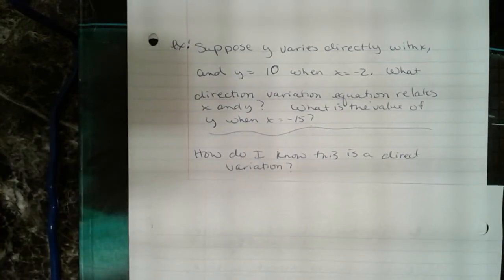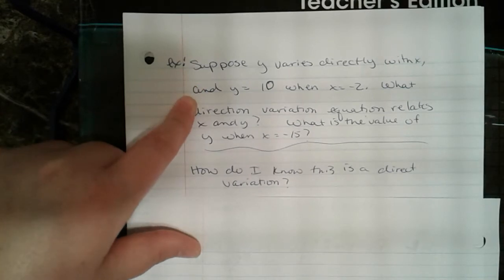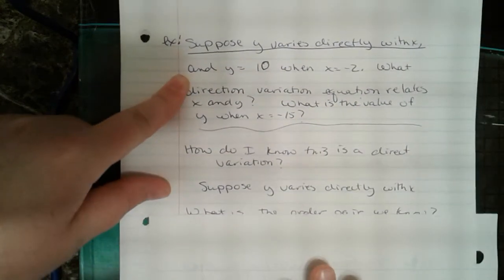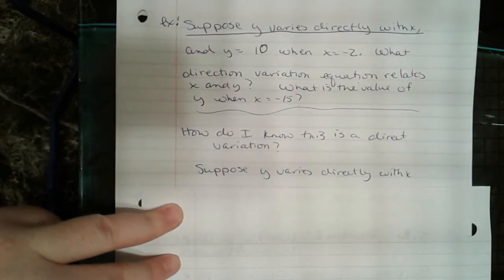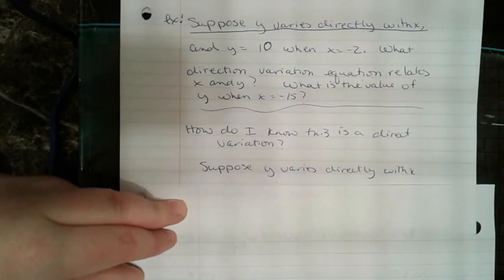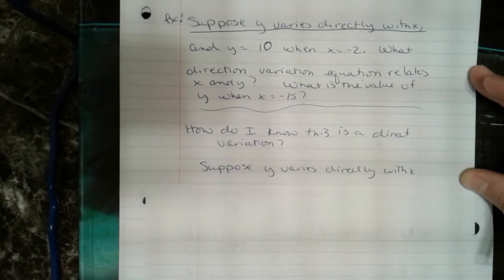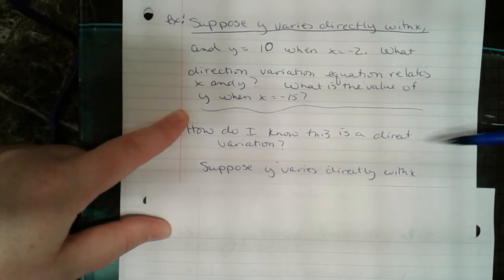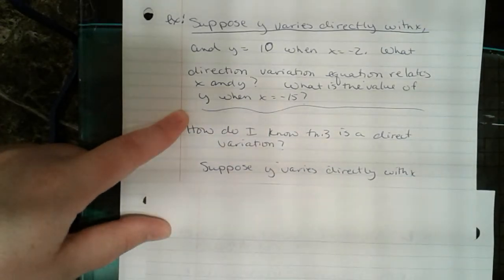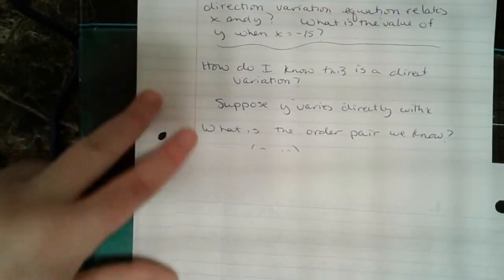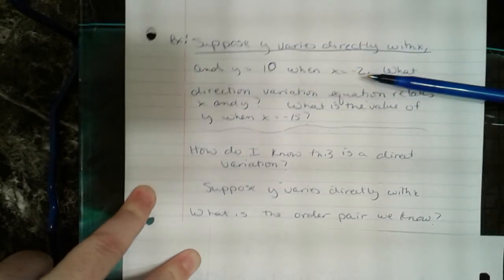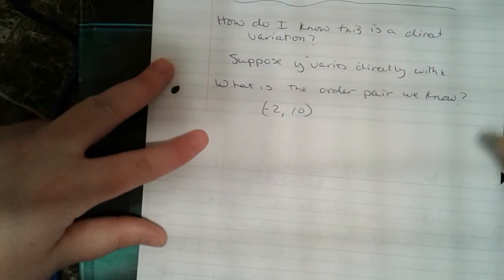The phrase 'suppose y varies directly with x' tells me it is a direct variation. My very first question is: am I even dealing with a direct variation? Yes, I am, because of that first phrase. The ordered pair we know is (-2, 10), because y is 10 and x is negative 2.